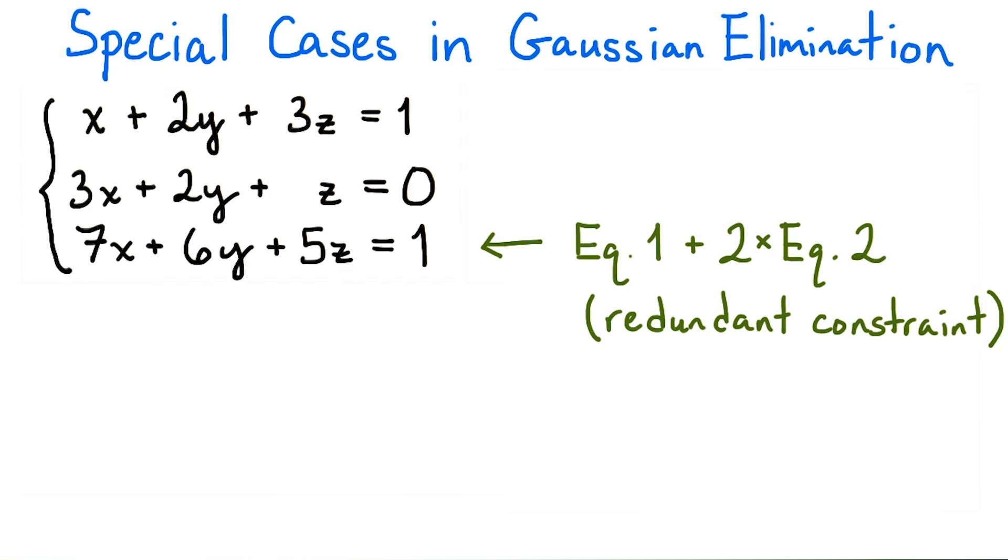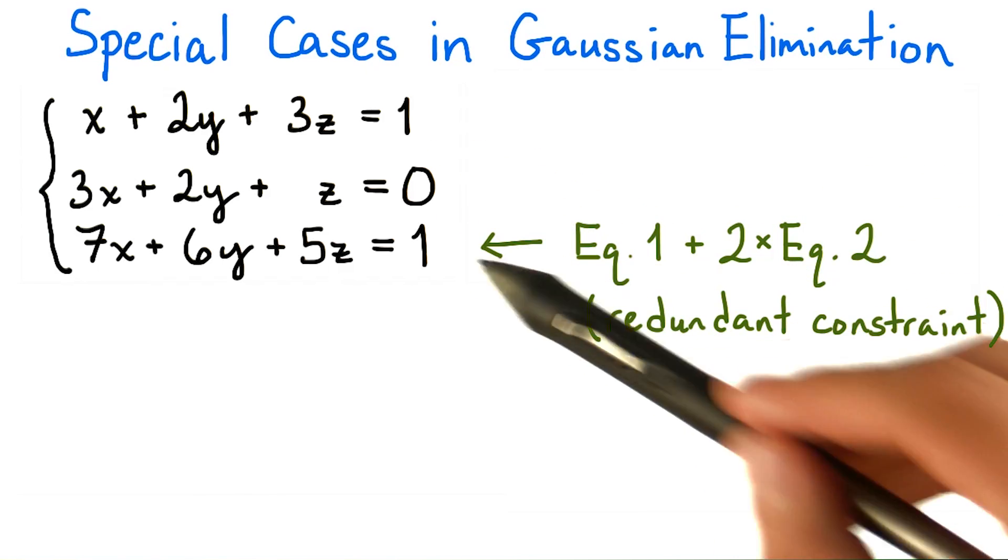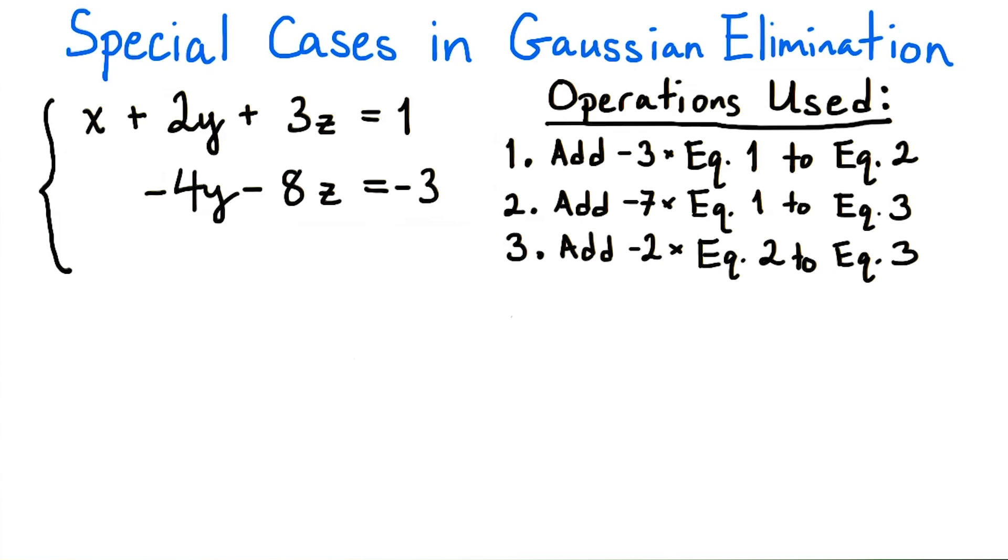In fact, notice that in the original system, if we added the first equation to 2 times the second equation, we would get the third equation. So what do we do now?